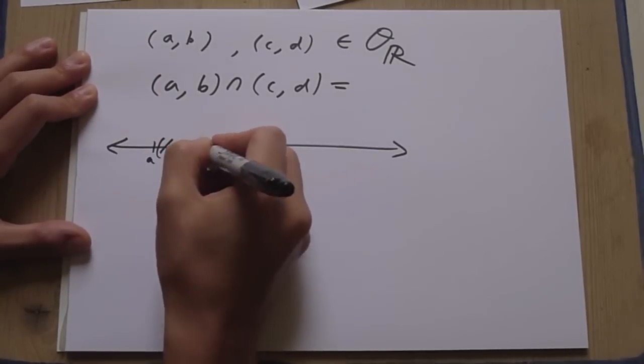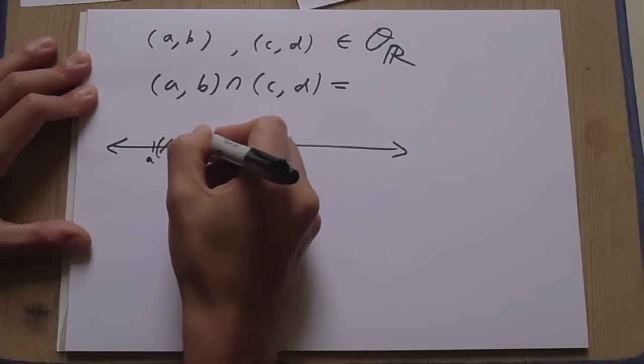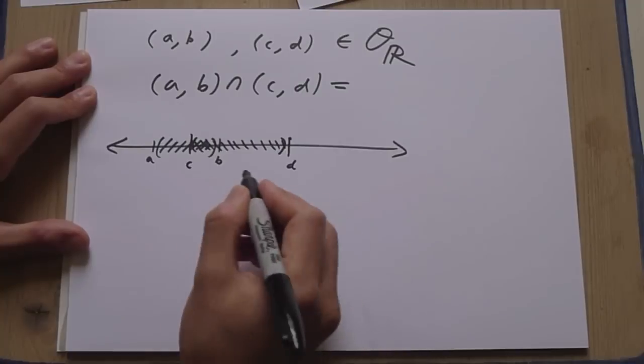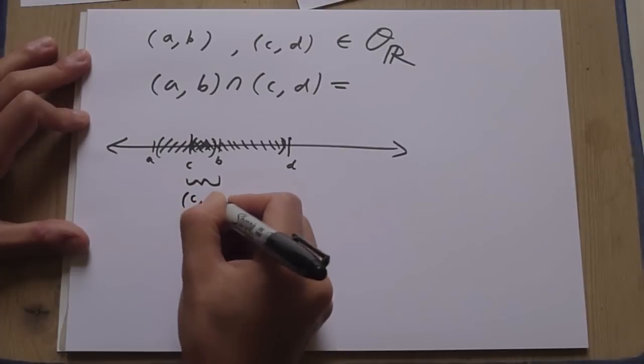A, B. And then you have C, D. Okay, and we see they intersect here.